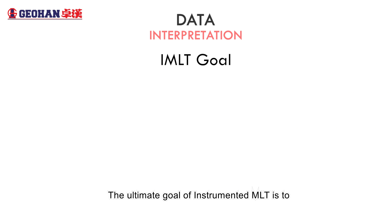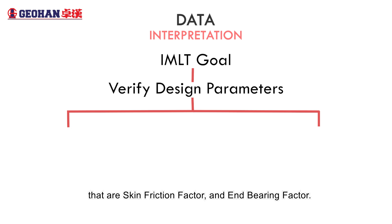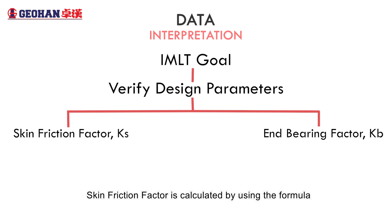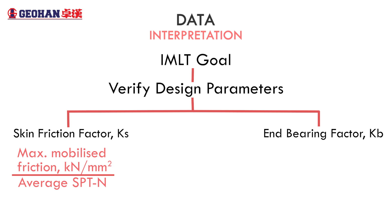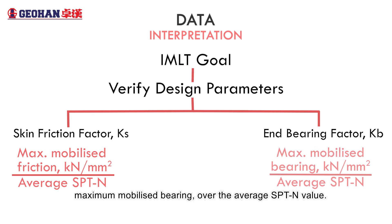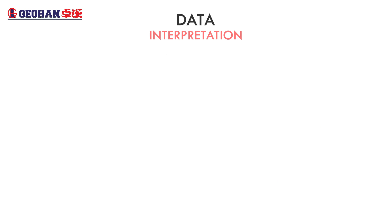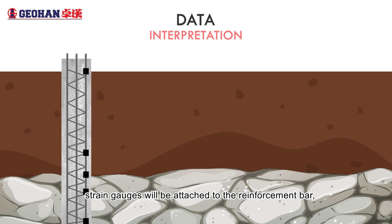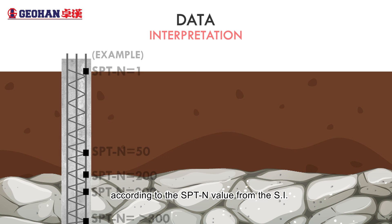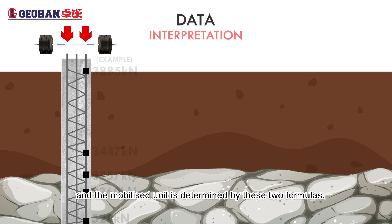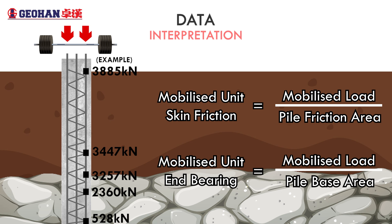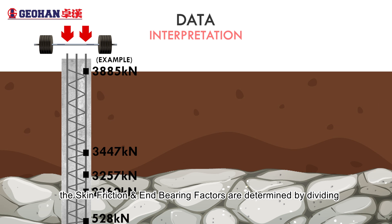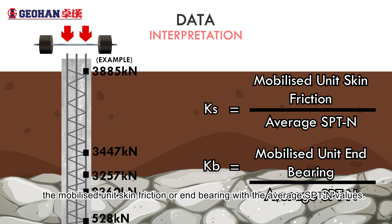The ultimate goal of instrumented MLT is to verify the pile foundation design parameters, that are skin friction factor and end bearing factor. Skin friction factor is calculated using the formula: maximum mobilized unit friction over average SPT-N value. While for end bearing factor, we use the formula: maximum mobilized unit bearing over average SPT-N value. To obtain the mobilized units for skin friction and end bearing, strain gauges are attached to the reinforcement bar, and the level between the gauges is determined according to the SPT-N values from the soil investigation. Each time a load is applied, the strain readings are recorded, and the mobilized unit is determined by these two formulas. The skin friction and end bearing factors are then determined by dividing the mobilized unit skin friction or end bearing by the average SPT-N values.